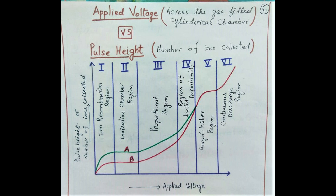Before going into details of individual detector types, it is useful to have a detailed understanding of the applied voltage versus pulse height curve. On the x-axis we have the applied voltage or the operating voltage of the detector, and on the y-axis it is the pulse height or the number of ions collected. In this diagram we can see two curves: curve A shows large initial ionization while curve B shows smaller initial ionization, corresponding to particles with higher and lower ionizing power respectively. This curve has been divided into six regions.